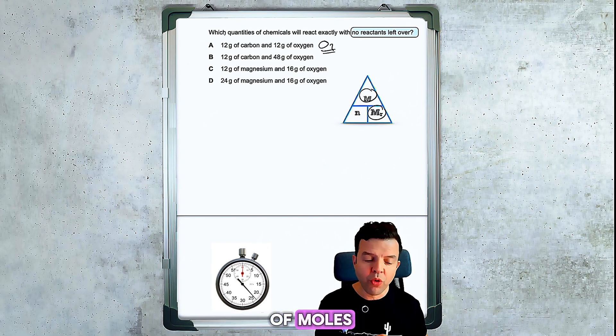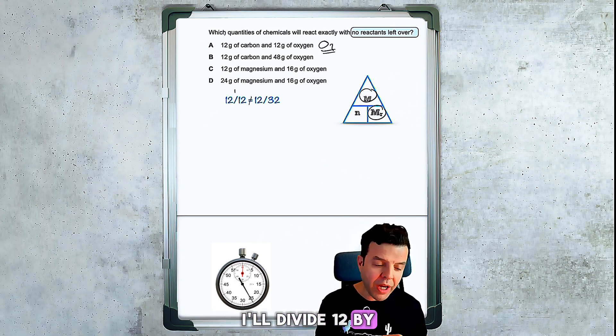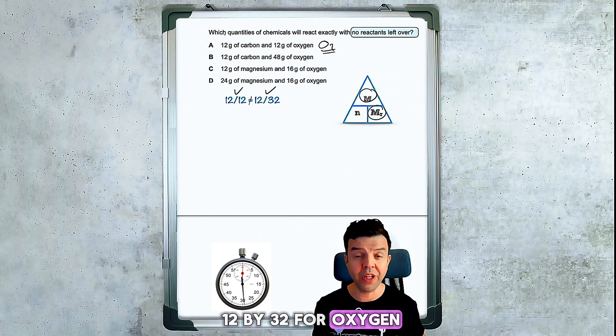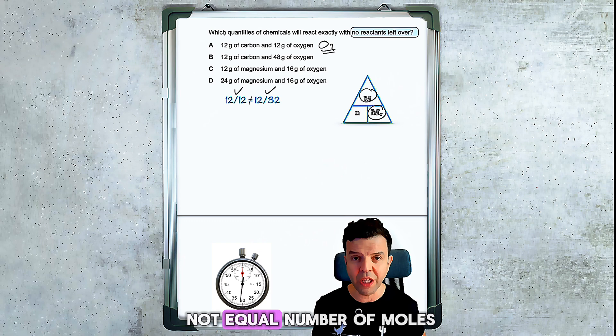To find the number of moles, I would divide 12 by 12 for carbon and 12 by 32 for oxygen. And obviously, these are not equal number of moles.